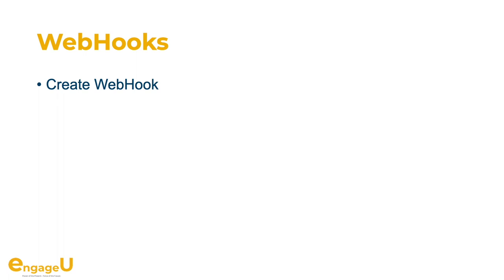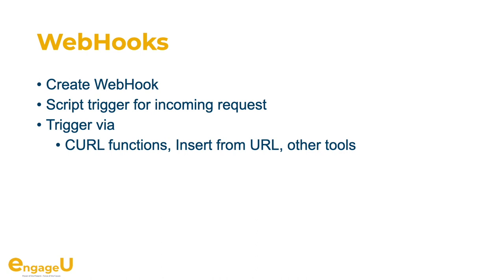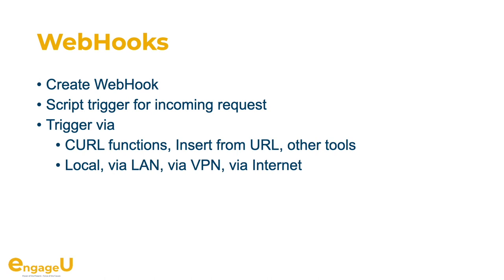We got support for webhooks. You may want to create a webhook in FileMaker Pro, with an iOS app, or even on a server, so you get a script triggered for incoming requests. You can trigger the request with our curl functions, with Insert from URL, even from FileMaker Go, or through other tools like a command-line call. This can be locally within the computer, over the local network, via VPN, or through the internet — but I don't recommend putting FileMaker directly on the internet; please use a VPN. You can use HTTP or RAW mode — RAW mode is very useful if you have a special device like a scale that sends you a data package whenever something is put on it. Optionally you can enable SSL or TLS.